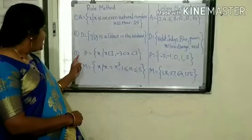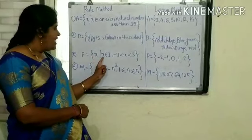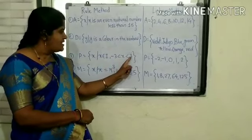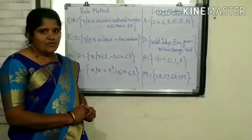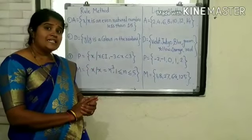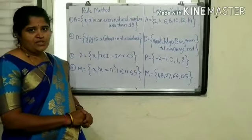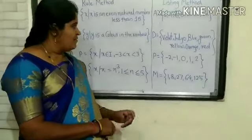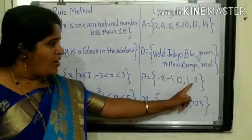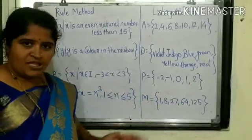Now let us see the third example, which is of set P. P = {X | X belongs to the set of integers I, and -3 < X < 3}. In this example, the property of the variable is that X belongs to the set of integers and these integers are between -3 and +3. By listing method: P = {-2, -1, 0, 1, 2}.